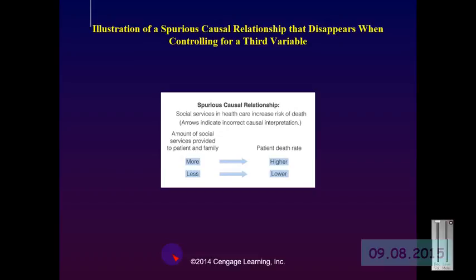In the example in this slide, we can see two variables: the amount of social services provided to patient and family — either more or less — and the patient death rate — higher or lower. When we run analysis on the type of intervention, we will often find that patients who receive more social services die at a higher rate than those who receive less. But obviously we don't want to believe that our social work interventions are causing people to die — something else must be going on.